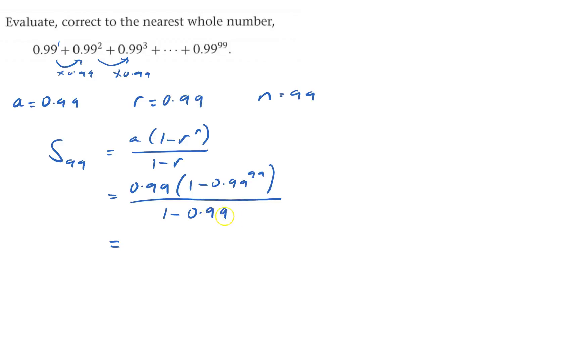This leaves me with 99 times (1 minus 0.99 to the power of 99). On a calculator, that's 62.39676.